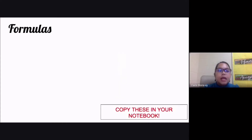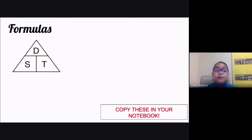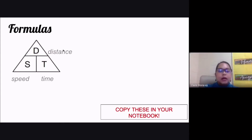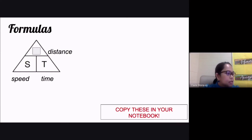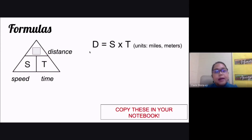Today we start with one of the motion-related terms, which is speed. Whenever you are solving speed-related problems, you use this little pyramid on the screen. D stands for distance, S is speed, and T is time. To solve for distance, you simply cover the letter D and you see the formula: distance equals speed times time.